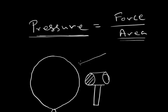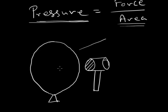But in case of the needle, the effective area is very small because the area of the pin is very small. Hence, the pressure for the equal amount of force is very large. In case of the needle, it is able to pierce through the balloon and it bursts.